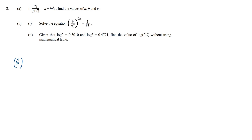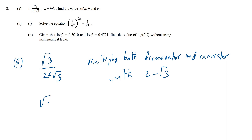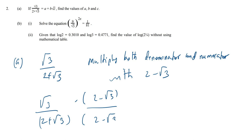For part 2a, you have √3 over (2 + √3). We're going to express it in terms of a + b√c. We're going to multiply both denominator and numerator by (2 − √3).